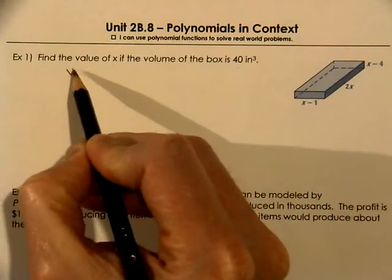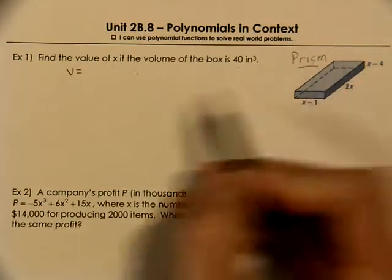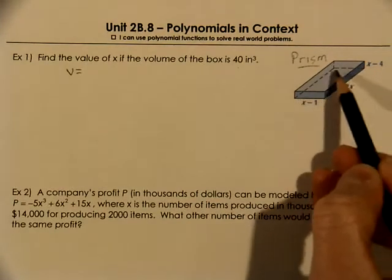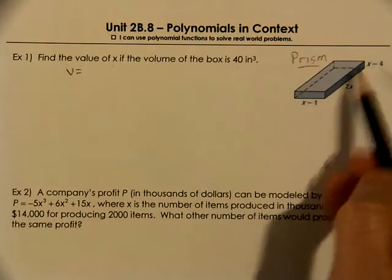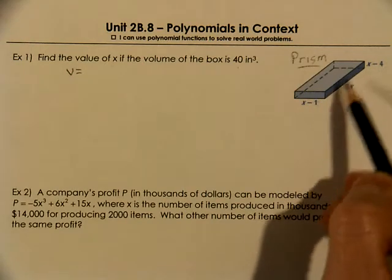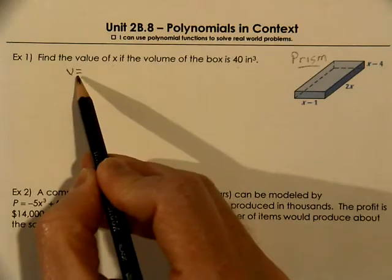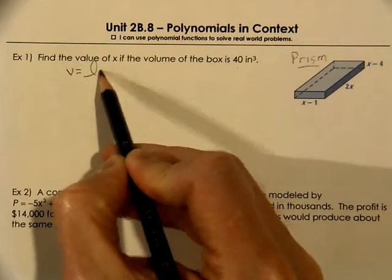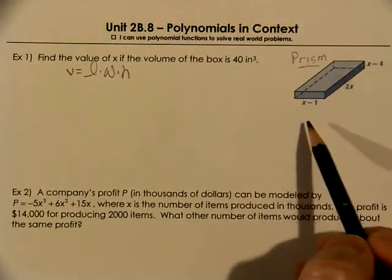We know that volume of a prism, a prism is a box, it has a polygon for a base and it works its sides straight up with rectangles on the side. So this is a rectangular prism because the base is a rectangle. The volume we always know is length times width times height for all the rectangular prisms.